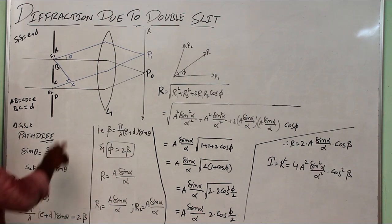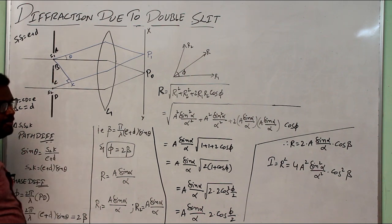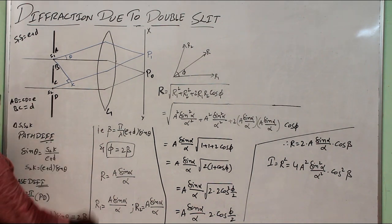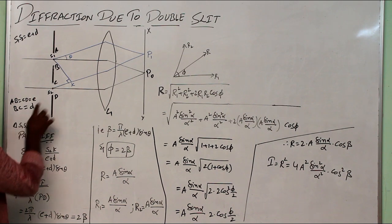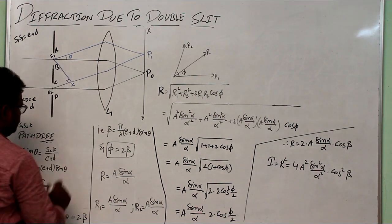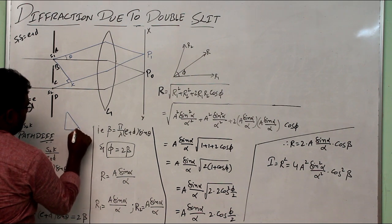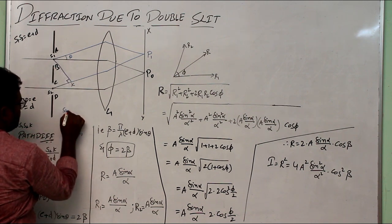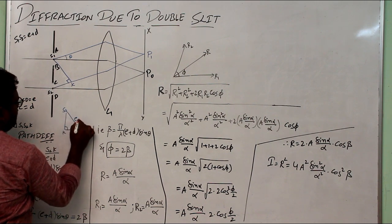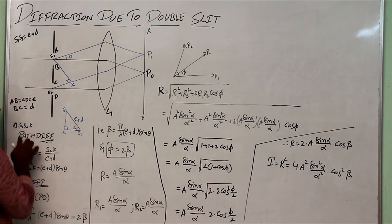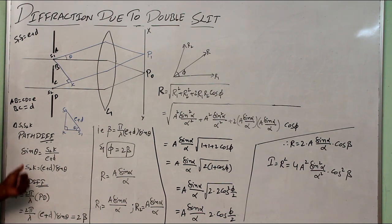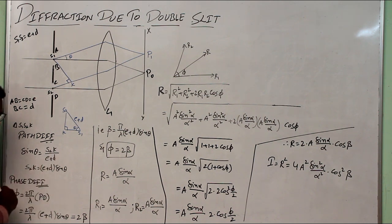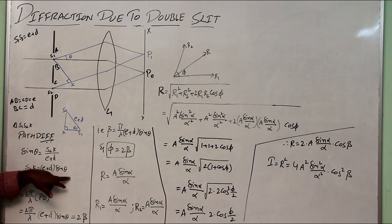To calculate the path difference, draw a perpendicular from S1 to the ray from S2, meeting at point K. We need to find S2K using triangle S1S2K. In this triangle, the right angle is at K, angle theta is at S1, and the hypotenuse S1S2 equals e plus d. Applying sin theta gives: sin theta = S2K / (e + d), so S2K = (e + d) sin theta. This is the path difference.